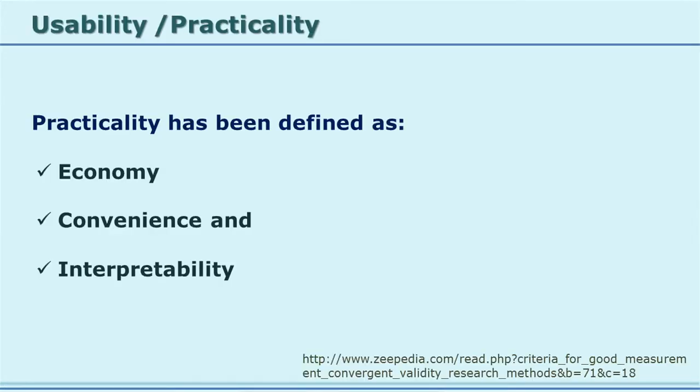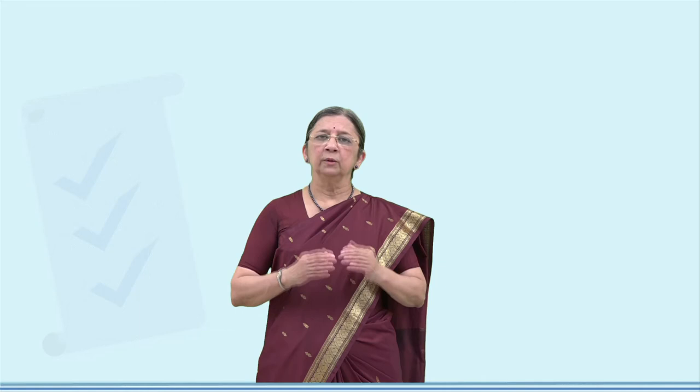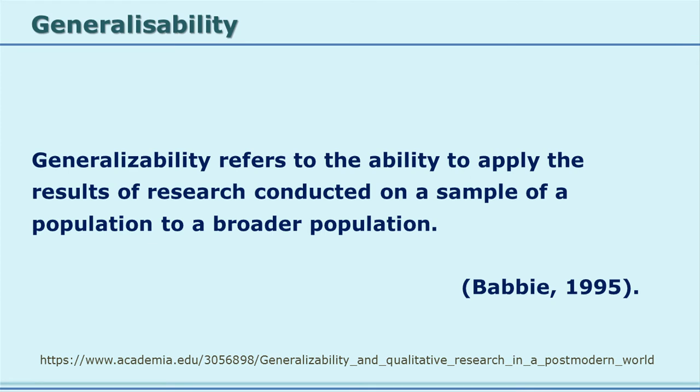Practicability refers to three things: economy, convenience, and interpretability. Another characteristic of a tool is its generalizability. The researcher conducts research on a sample selected from a population, with a view for generalizing results to the whole population. Though you are working on a small sample, you want the findings to be generalizable for the whole population. For this, the sample must be randomly selected and representative of the population.